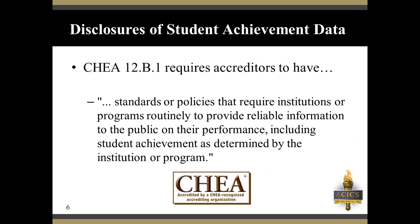The Council on Higher Education Accreditation has a specific standard, 12B1, that requires ACICS to have standards or policies requiring institutions or programs to routinely provide reliable information to the public on their performance, including student achievement as determined by the institution or program. There is very close parallel between the language in 12B1 of the CHEA standard and the ACICS criteria — both in terms of flexibility and specificity — so the data produced and reviews flowing from this exercise are as relevant to this standard as possible.